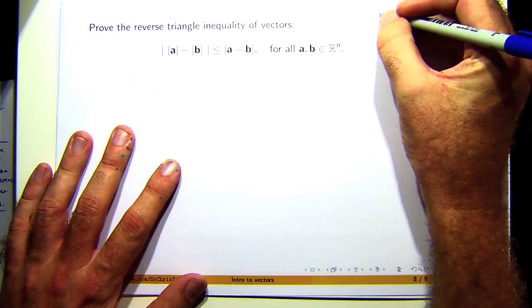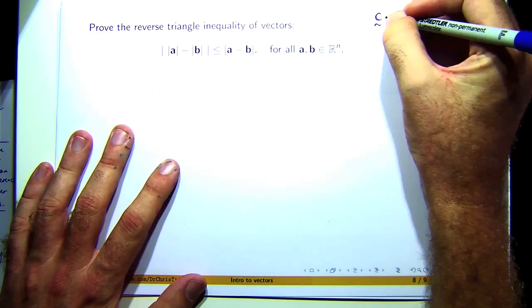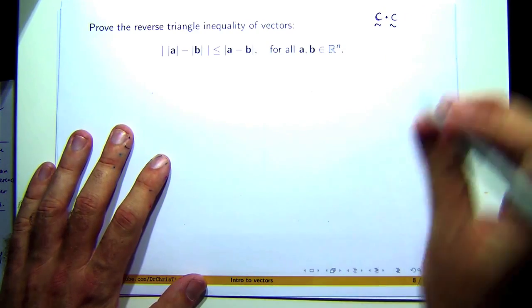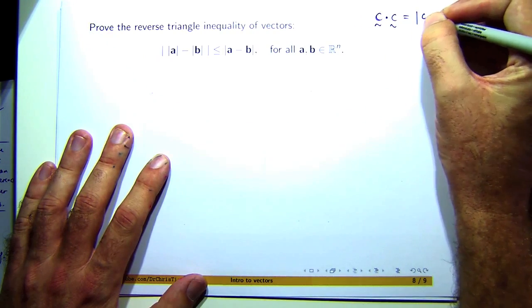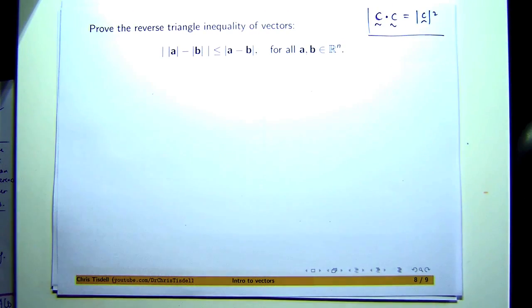So just a little identity to start us off. If you take a vector, say c, and you dot it with itself, it is the square of the length of c. It's not too difficult to prove that using the definition of the dot product and the definition of the magnitude.